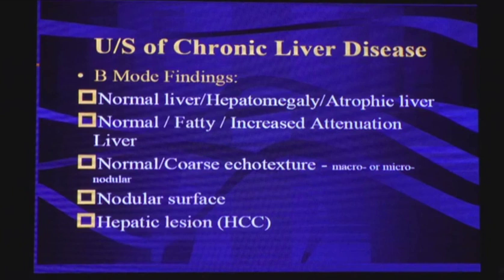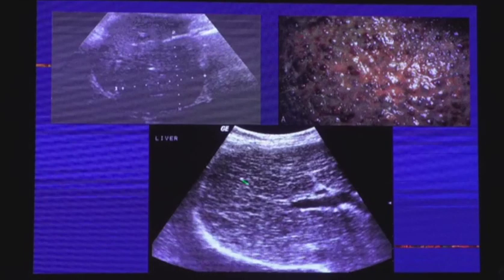On B-mode findings, we assess normal liver or hepatomegaly, atrophy, fatty changes or increased attenuation, echo-texture, and the surface of the liver — any nodularity or focal lesions which are complications of chronic liver disease. When the liver appears quite nodular and coarse, there is no doubt that there is established, advanced chronic liver disease.